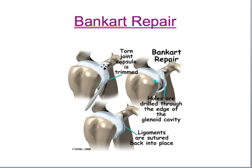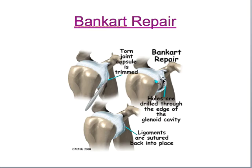With the Bankart lesion, there is a tear in the anterior capsule of the shoulder as well as a tear of the labrum of the glenoid fossa. They'll come in and do a Bankart repair, which means the surgery is such that the torn joint capsule is trimmed away — this is the anterior portion. Holes are then drilled to the edge of the glenoid cavity, and those ligaments are pulled back in and sutured back into place. So it's essentially tightening up the anterior capsule.